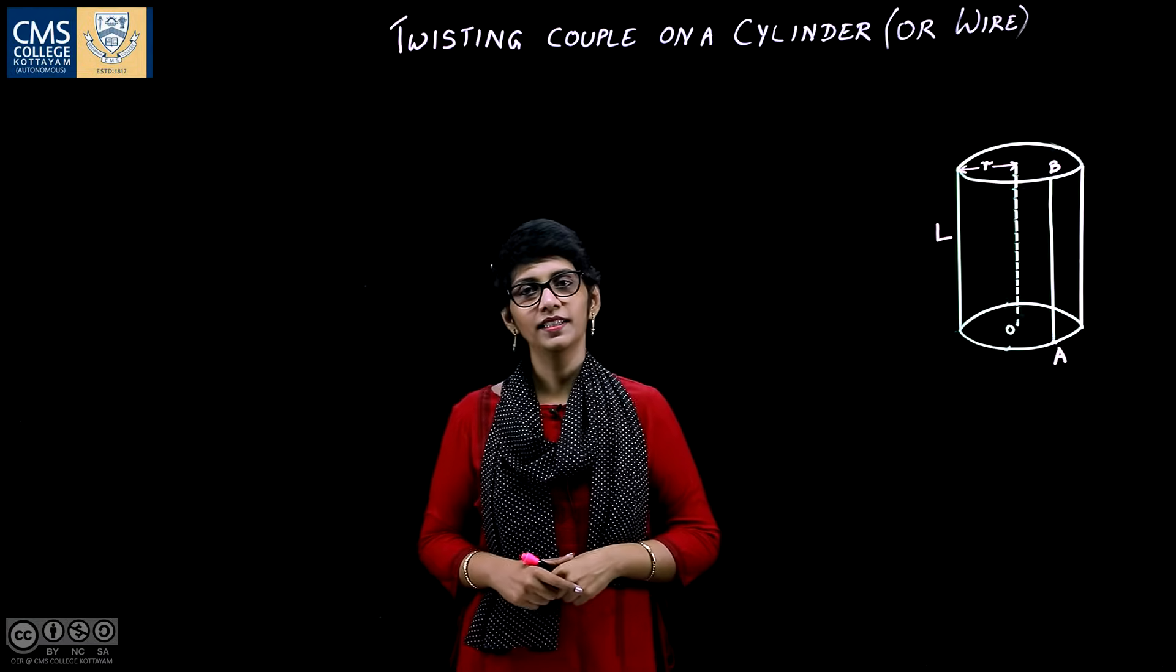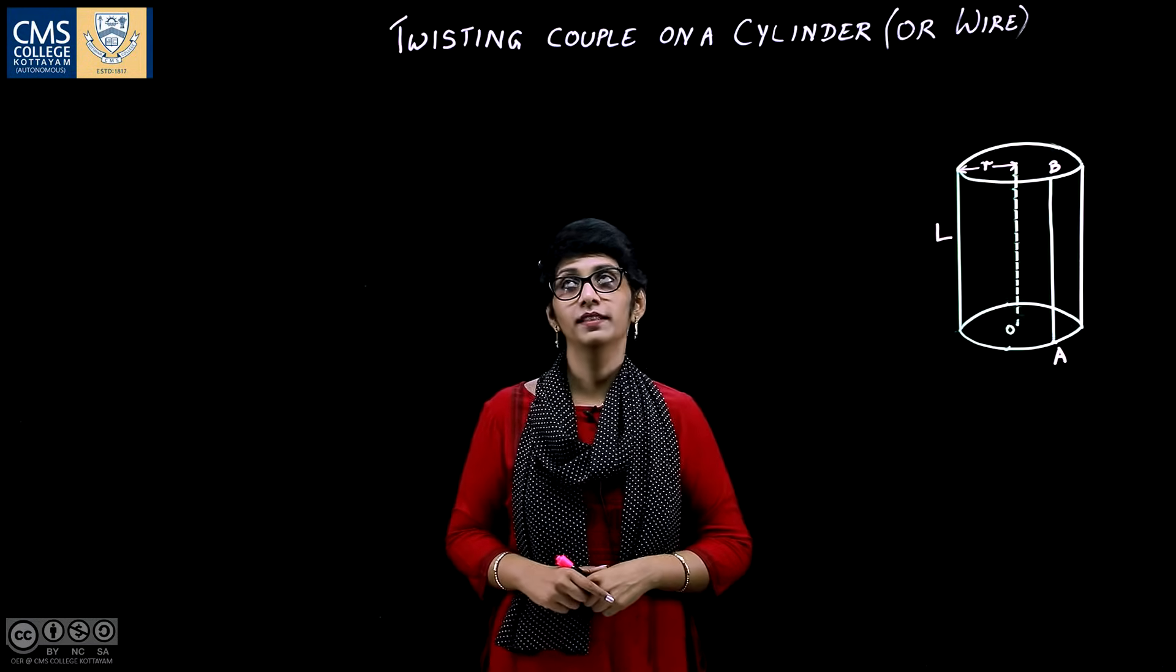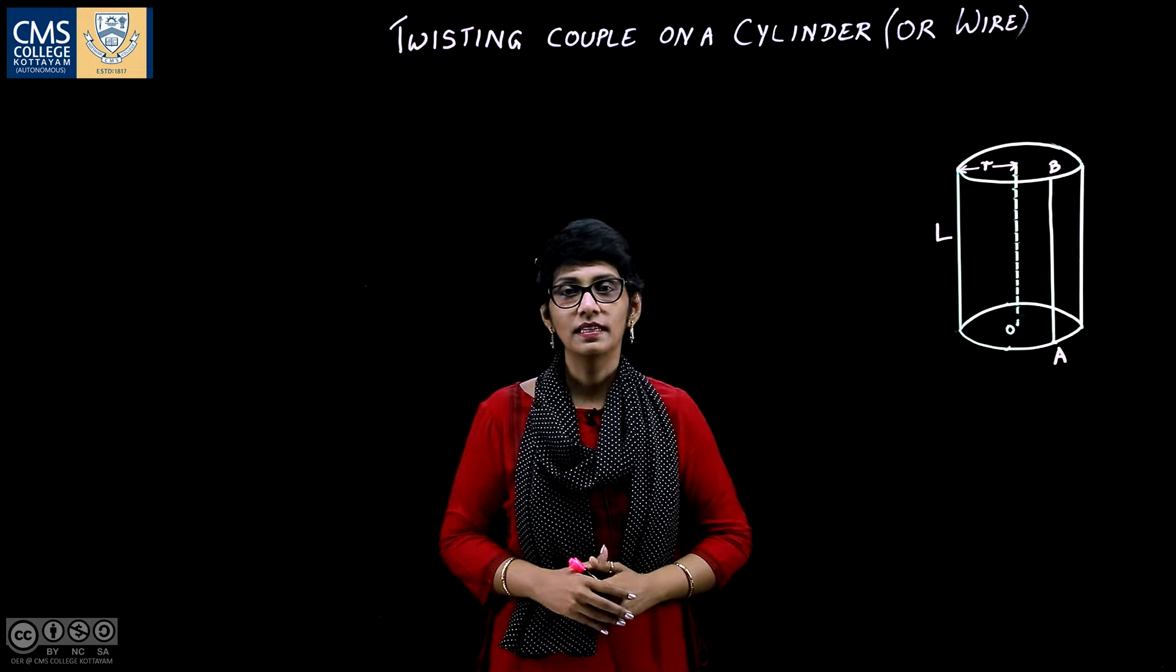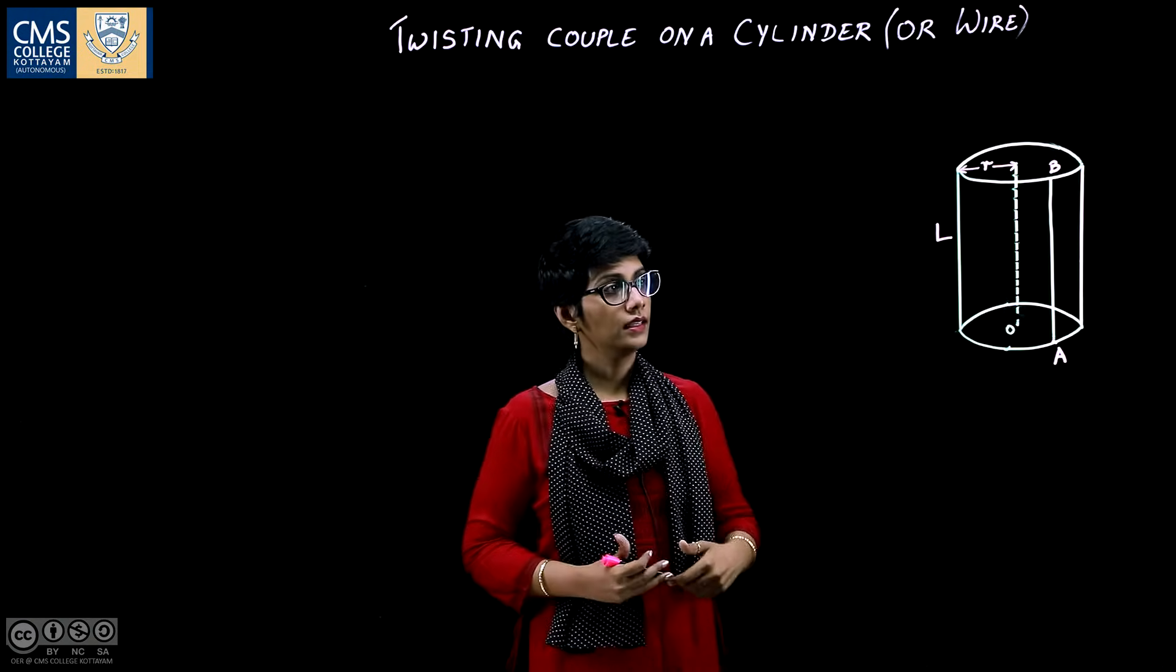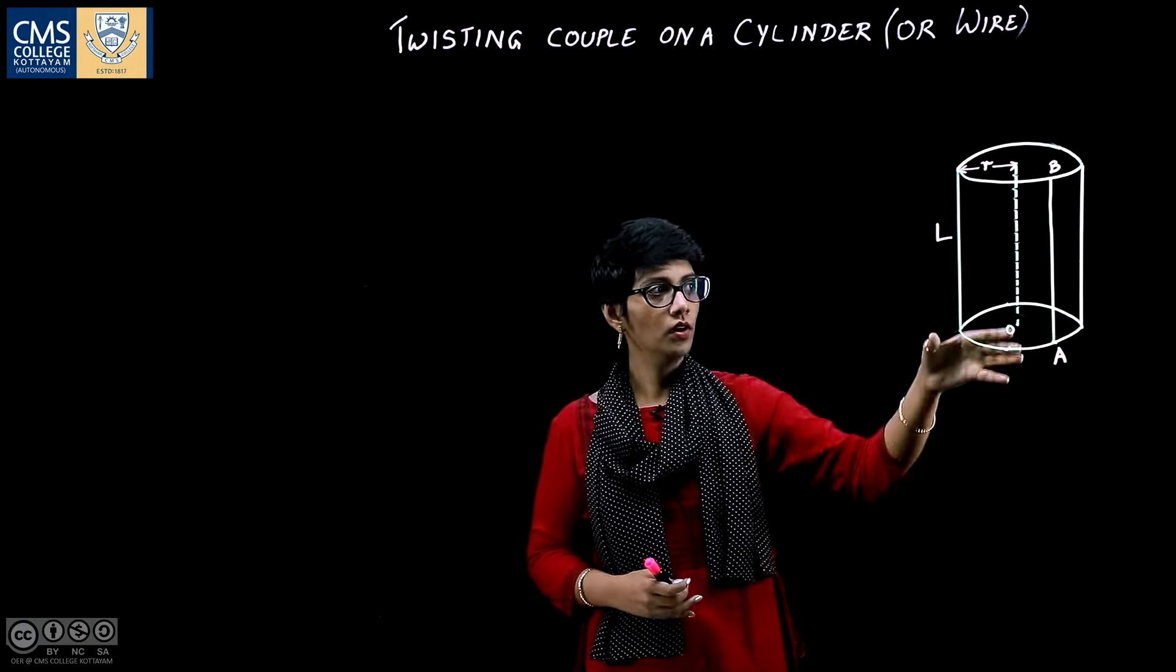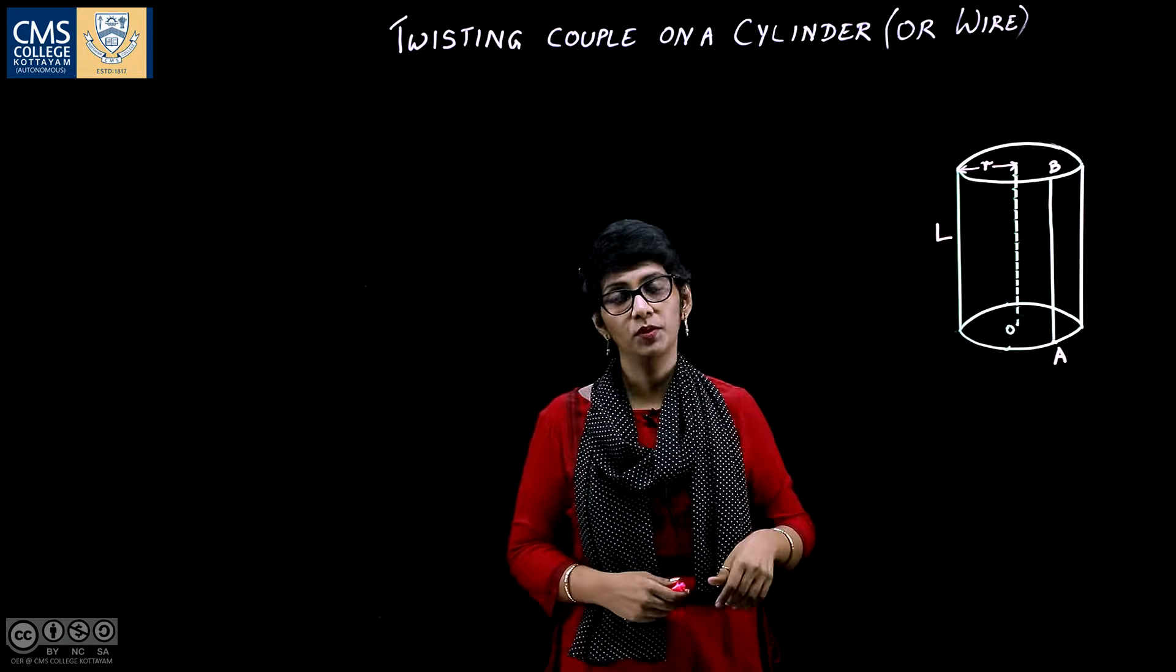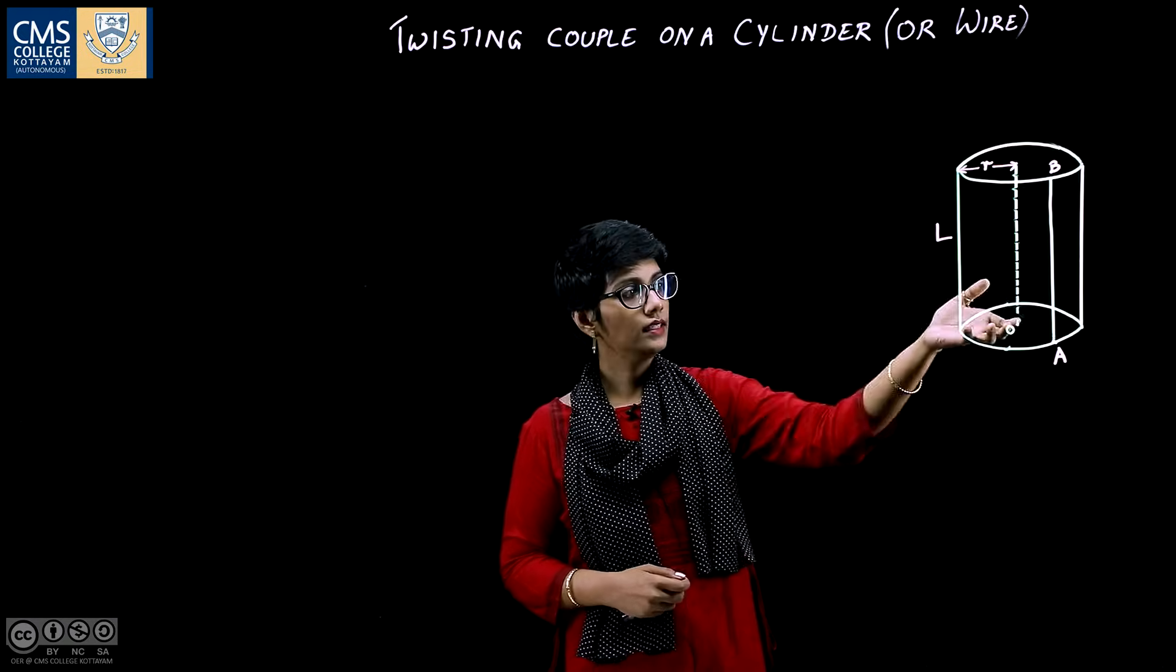Hello everyone, here in this video we are going to find the twisting couple on a cylinder or wire. Consider a cylindrical rod whose one end is clamped or fixed and the other end is kept free.